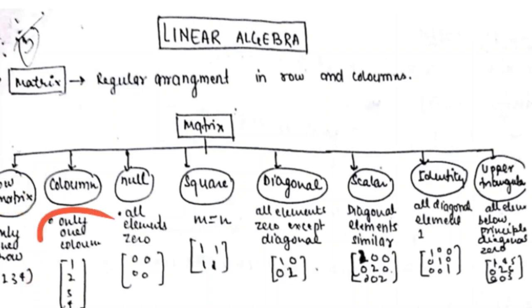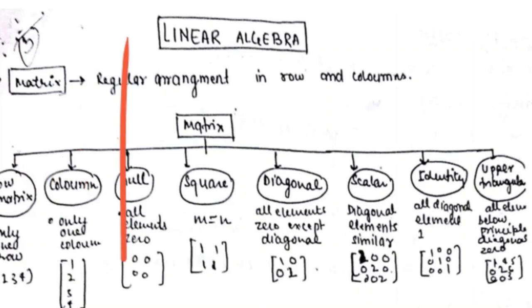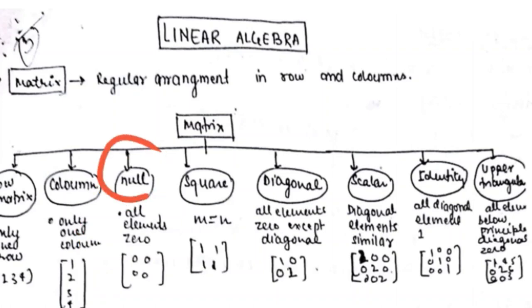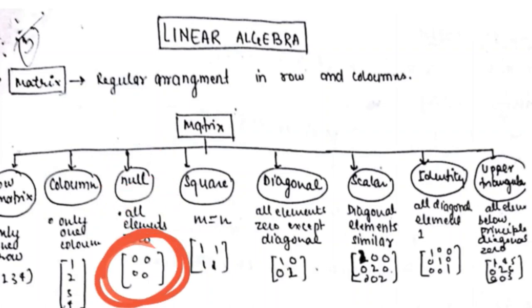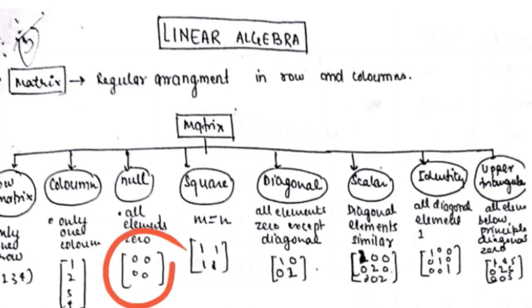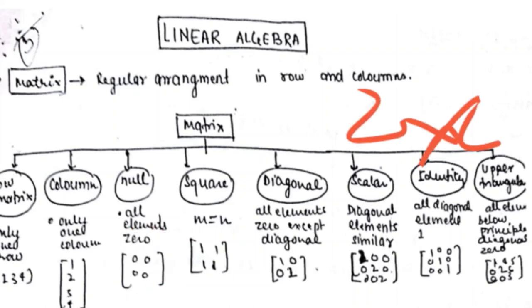If there is only one column with multiple rows, then it is known as a column matrix. Vertical is column, horizontal is row. A null matrix is one in which all elements are zero. That kind of matrix is known as a null matrix — for example, a two by two matrix with all zeros.